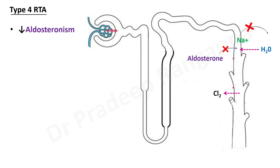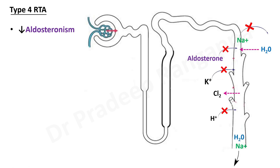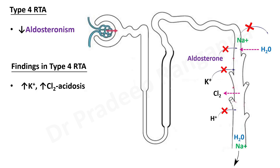Like all RTAs, chloride keeps getting reabsorbed — normal anion gap hyperchloremic acidosis is the hallmark. Potassium remains in the serum causing hyperkalemia, and hydrogen does not get secreted in the collecting tubule, leading to acidosis. Sodium remaining in the tubule also draws water, causing sodium and water loss. Findings include hyperkalemia and hyperchloremic acidosis; urine pH is more than 5.5.